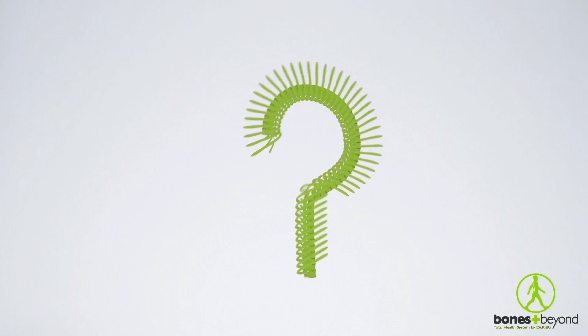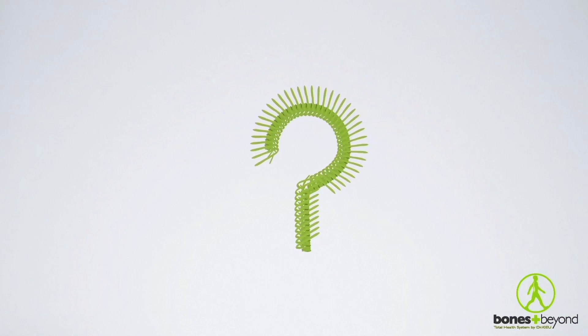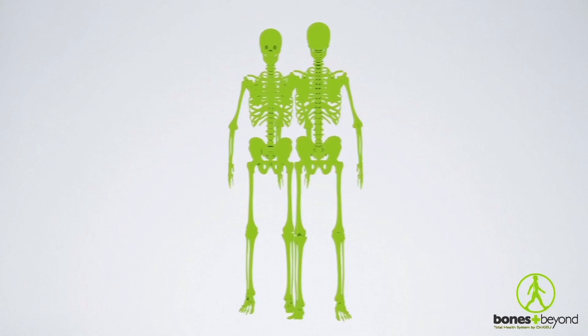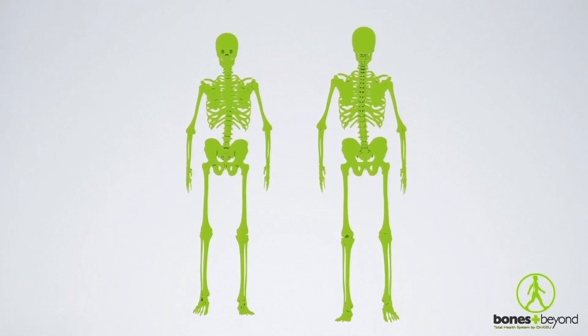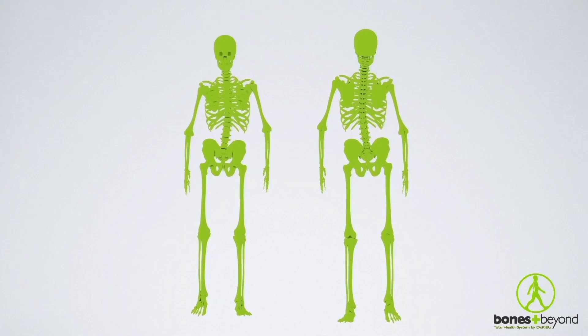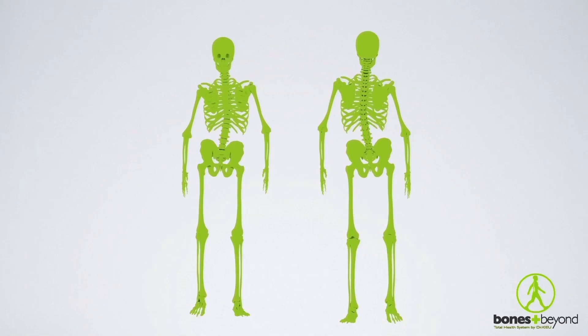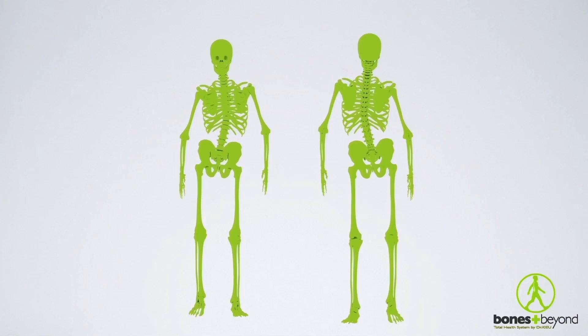So what is scoliosis and how does it affect the spine? Scoliosis is a neurological, muscular, and skeletal disorder that can involve misalignment of the head, neck, mid-back, lower back, and pelvis.